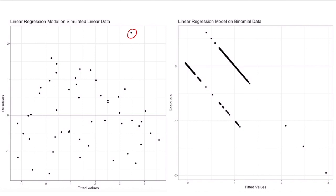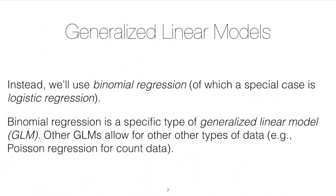So what is the solution? Well, the solution to the problem when you have a binomial response is to use binomial regression. And so maybe you've heard of logistic regression before. And logistic regression is a particular type of binomial regression. And we'll talk about how it arises. And we'll also see that binomial regression is a specific type of generalized linear model. And GLMs allow for other types of data too, not just binomial data. So we'll look at other count data like Poisson data.